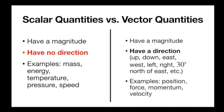Speed is an interesting one. Speed is just an amount that describes how fast something's moving — 3 meters per second, 10 kilometers per hour, whatever. But it doesn't have a direction. Speed does, however, have an analog with a direction. So if I take a speed and tell you it is left or north or up, it is now a velocity. So velocity is a vector quantity.